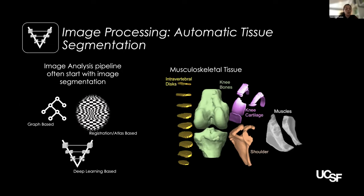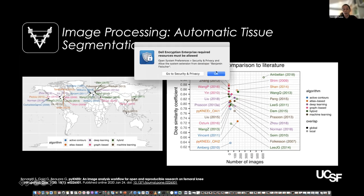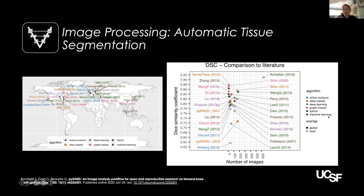Some of the mostly used ones are either graph-based or atlas and registration database, and more recently machine learning and deep learning-based algorithms. This is a review paper from 2020 — a nice overview of the landscape of segmentation in musculoskeletal imaging, particularly focused on cartilage segmentation on MRI. In this graph you can see different methods classified by type, all compared based on the number of images used to test the algorithm and the dice coefficient, which is a metric for the overlap between the manual and the automatic segmentation.